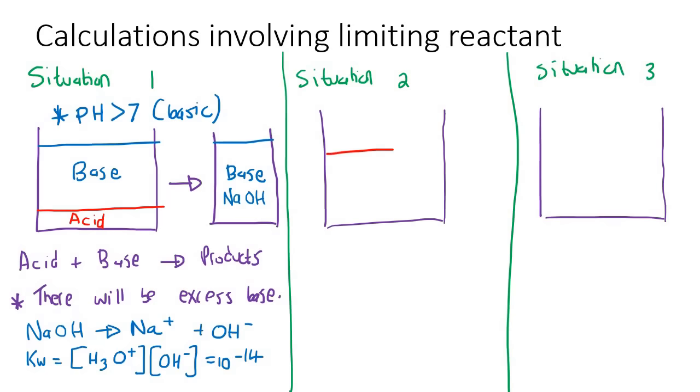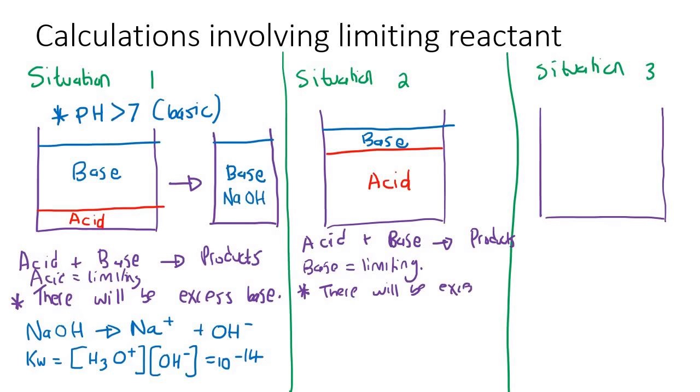Situation two. Let's say we add a lot of acid, small amounts of base. Now we know that these two will react with each other. That is what acids and bases do. They react with each other. They destroy each other or they neutralize each other and that will give us products. So can you agree with me that there's probably going to be excess acid over here because the base is going to run out first. So let's say here that the base will be limiting. Here I should have said that the acid is limiting. So therefore there will be excess acid.